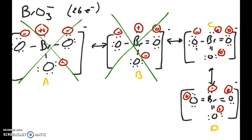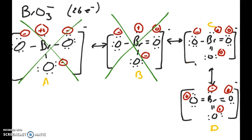Rule three says the negative formal charge should be on the more electronegative atom. In this case, the negative charge is on different atoms in the two remaining structures. Oxygen is more electronegative than bromine, so structure C is the best resonance structure. Keep in mind that D is not necessarily bad — the experimental structure may be a hybrid or weighted average, perhaps 70% like C and 30% like D.